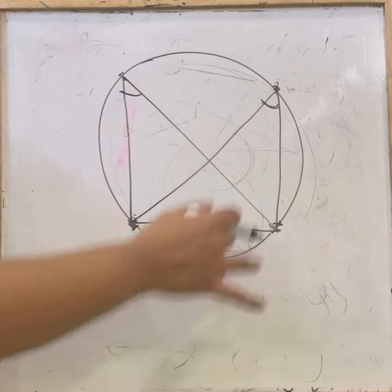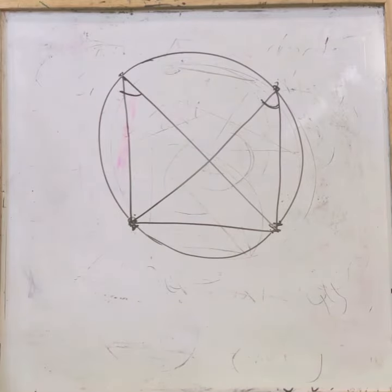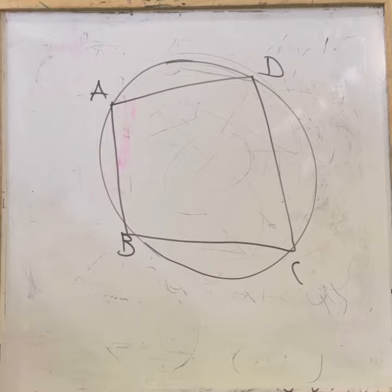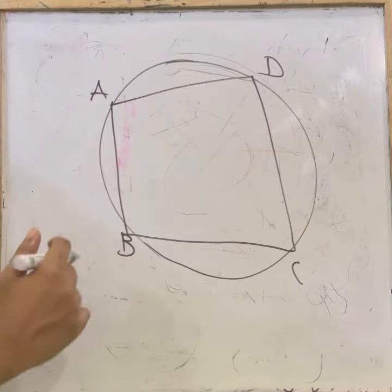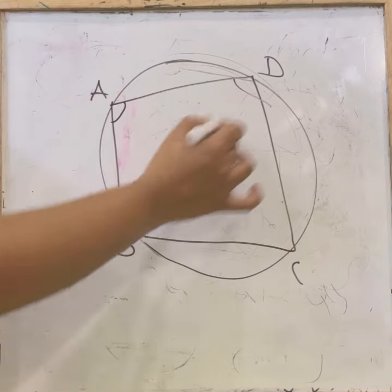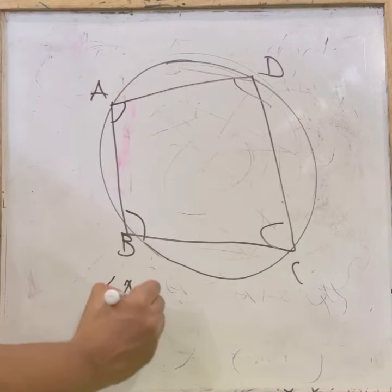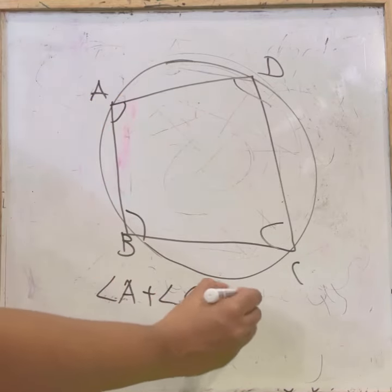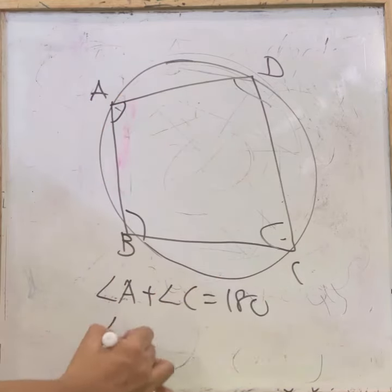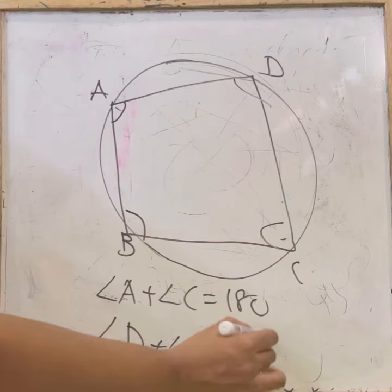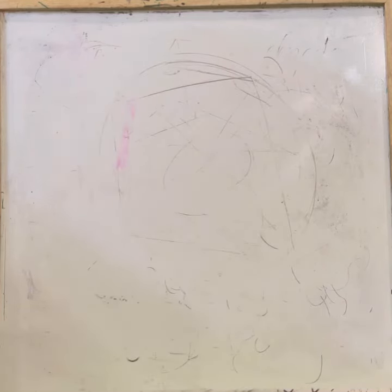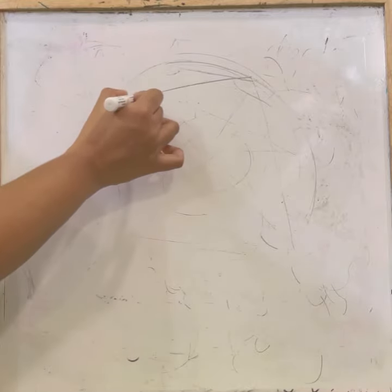Next, let us check cyclic quadrilateral — that is, a four-sided figure inside a circle. You can see four angles: angle A plus angle C equals 180 degrees, and angle D plus angle B also equals 180 degrees.